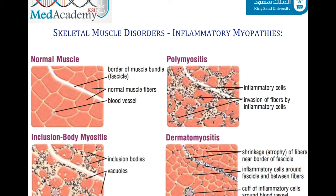Inflammatory myopathies are a group of muscle disorders characterized by immune-mediated inflammation of the muscles, meaning the body attacks itself due to immunological dysregulation. Based on clinical, morphological, and immunological features, they are divided into three major disorders: polymyositis, dermatomyositis, and inclusion body myositis.